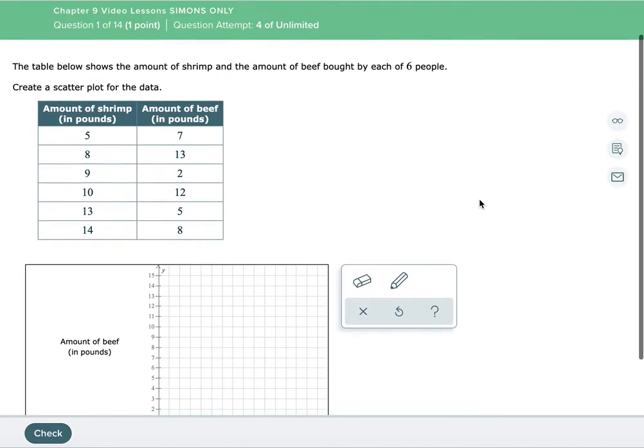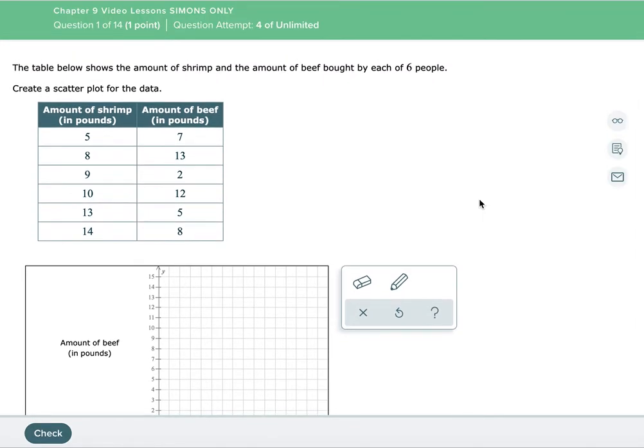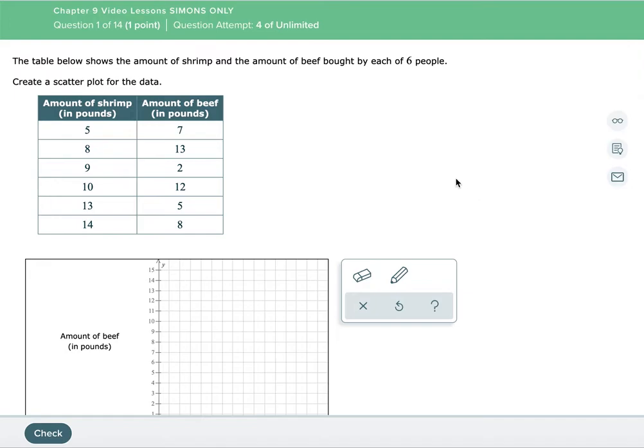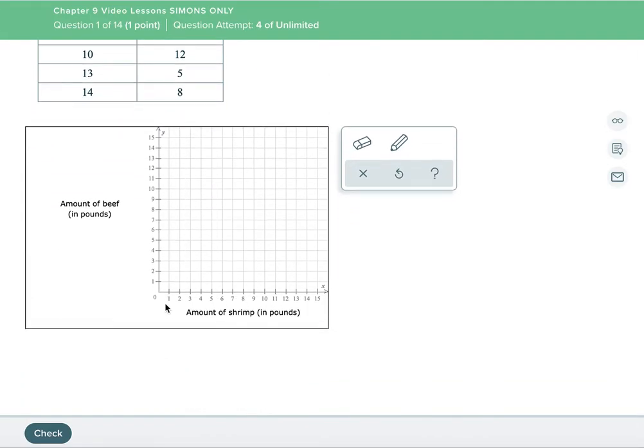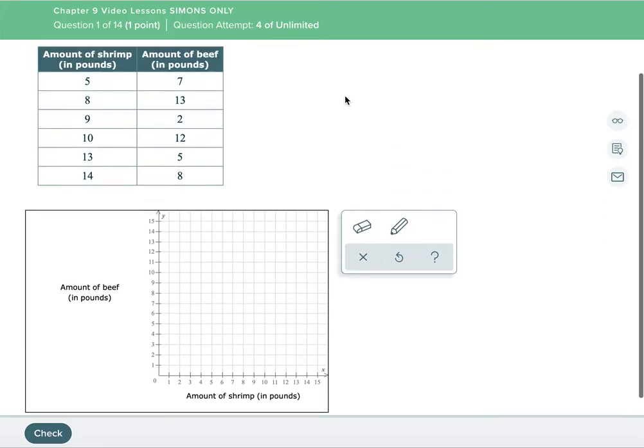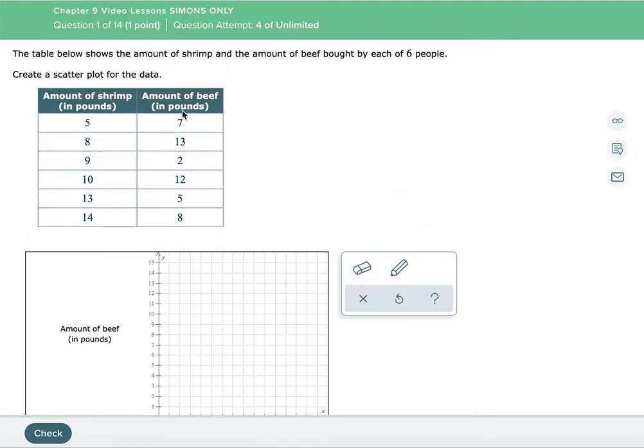So the first thing we need to know about scatterplots is, always in Alex I encourage you, read the question. The table below shows the amount of shrimp and the amount of beef bought by each of six people. Create a scatterplot for the data. So amount of shrimp is going to wind up being our X, that's our independent variable, and then the amount of beef is going to be our Y axis, and you can see it because it's here on the Y axis, that's going to be our dependent variable.